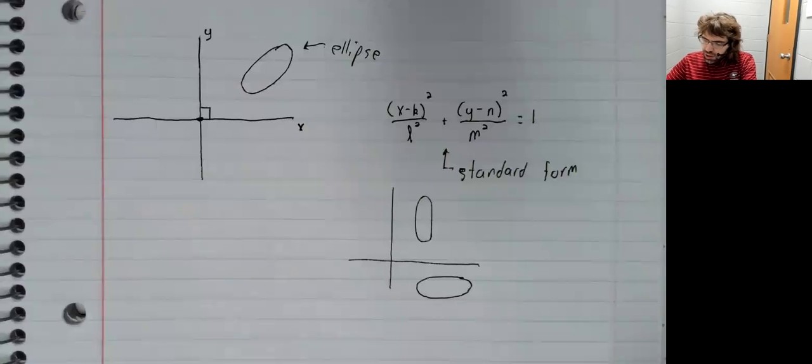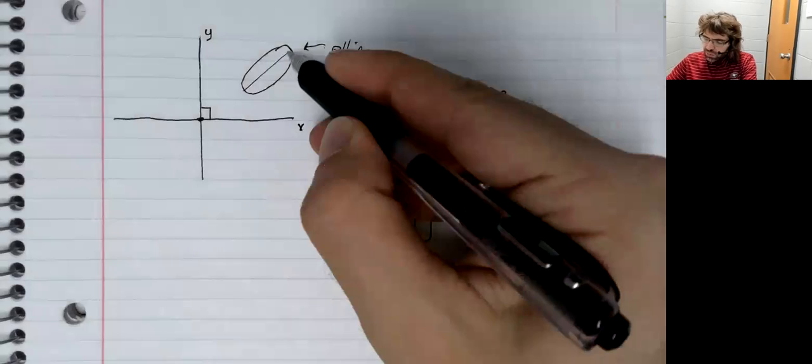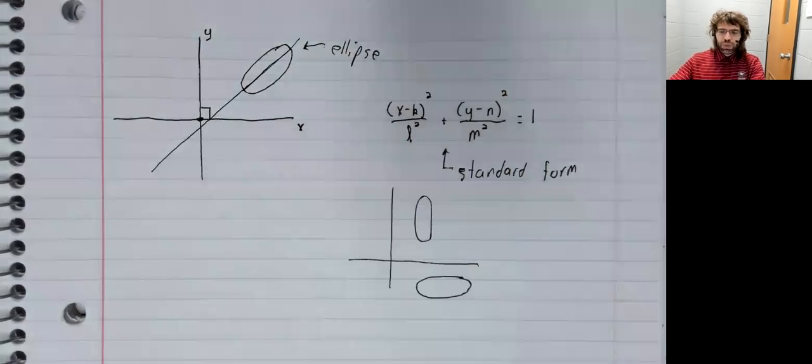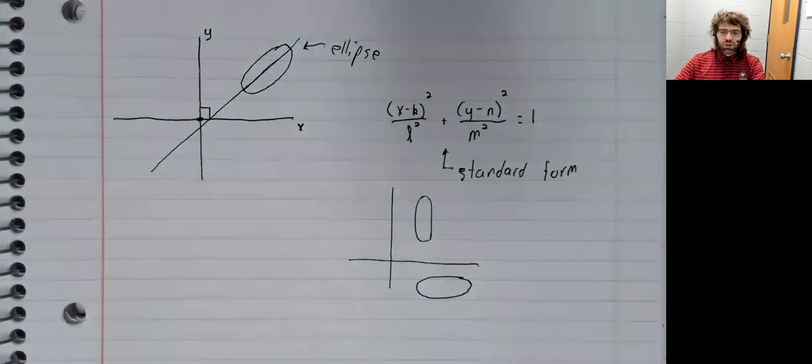Here, the major axis of the ellipse is there. It is parallel neither to the x-axis nor to the y-axis.